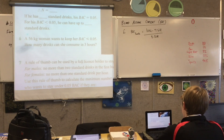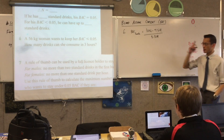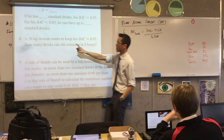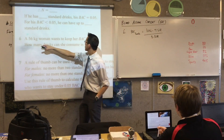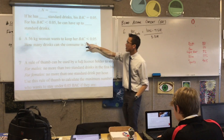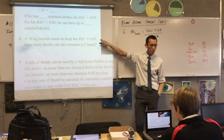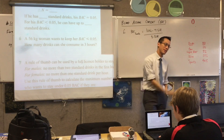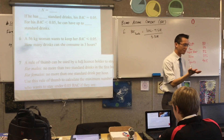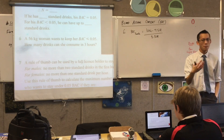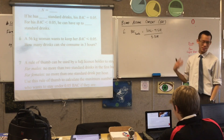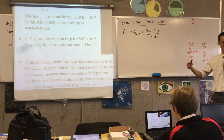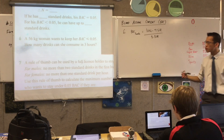They give us a whole bunch of information. They tell us it's a woman — we already know that. They've told us her mass, and it says she wants to keep her blood alcohol content below 0.05. Why? Because she wants to stay under the legal limit. How many drinks can she consume in three hours?